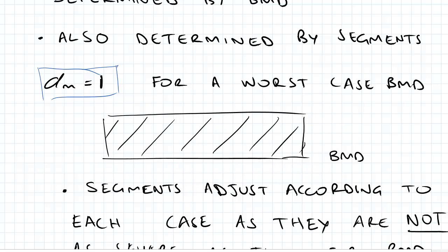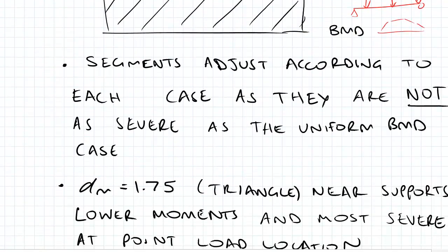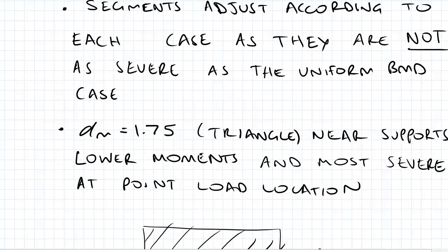But that's not really what happens. We might have a load here, there, or there, and the BMD can look something maybe like that. We have areas where there's zero moment. It might not be at the supports that there is some sort of moment. So as I've mentioned here, it's not as severe as alpha m equals one.